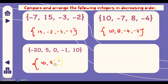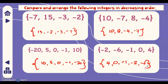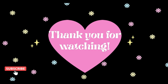Then negative 1 is greater than negative 20. Last example: we have 4, then 0, then negative 1, then negative 2, then negative 6.